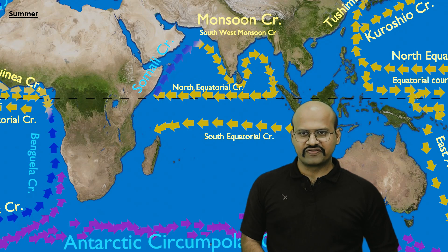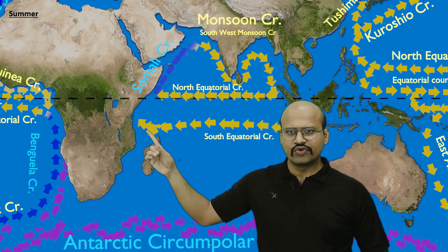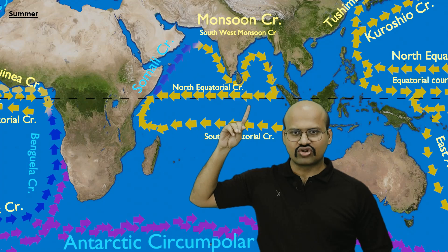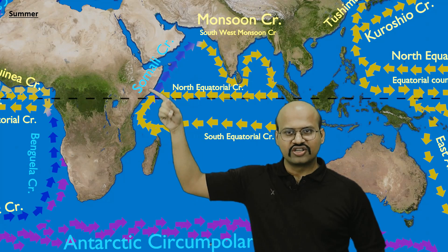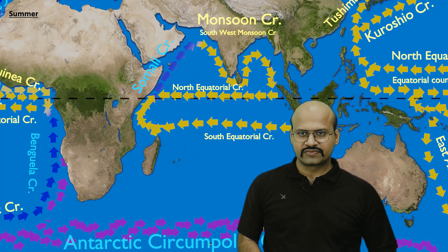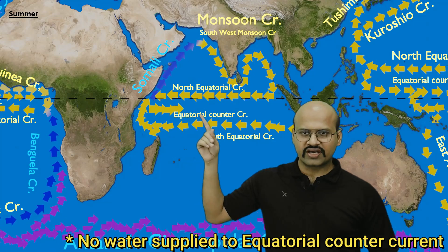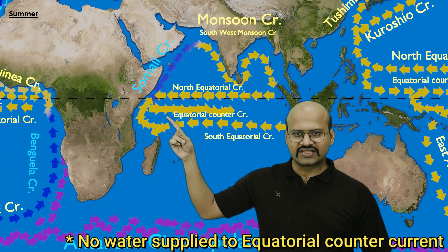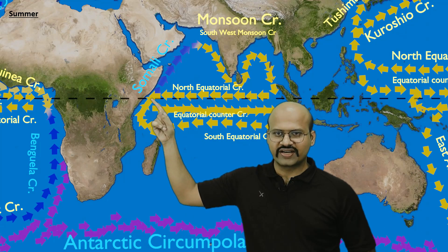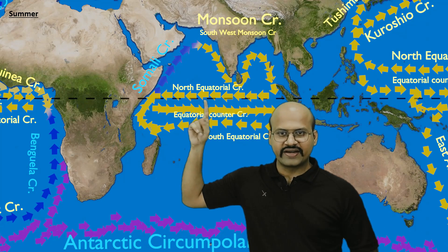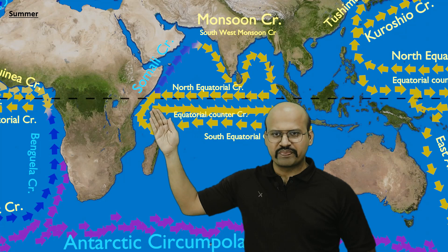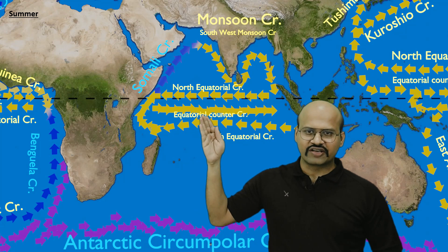In the summer season, a part of the south equatorial current moves north and adds water to the Somali current, and the north equatorial current also supplies water to the Somali current. The Somali current is very strong in summer. Since little water is left over, the equatorial counter current receives very little water, and therefore the equatorial counter current is very weak during the summer season.